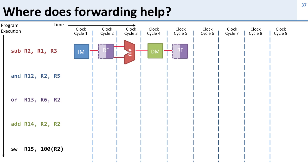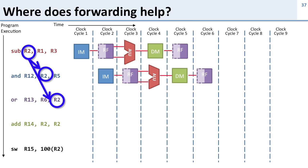Let's take a look at where forwarding can help us. Here we have a bunch of instructions with dependencies. The first subtraction generates the value R2, which is then used by the AND and OR instructions that follow. That value R2 is generated in clock cycle 3 from the ALU, and we need it in clock cycle 4 for the ALU for the AND. So if we can forward from the ALU output of the previous instruction to the ALU input of the next one, we can avoid putting in any bubbles. This data is available — it's just not in the register file when we need it.